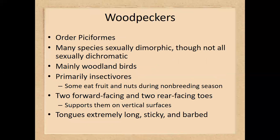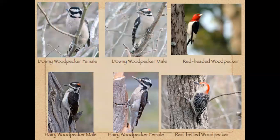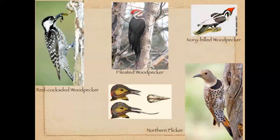Woodpeckers tend to show some sexual dimorphism, but not in all species. They are woodland birds, and there are many species of woodpeckers on campus. They are primarily insectivores, eating insects out of tree bark. They have zygodactyl feet with two toes forward and two toes backward, and their tongues are long, sticky, and barbed at the end. The downy woodpecker, red-bellied woodpecker, and hairy woodpecker can be found easily on campus. The northern flicker or pileated woodpecker may also be found nearby. The ivory-billed woodpecker is likely extinct.